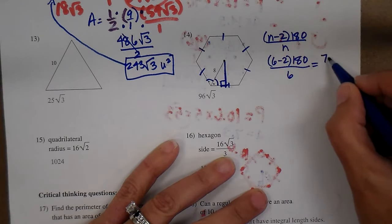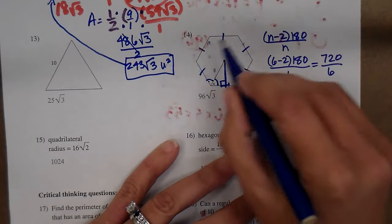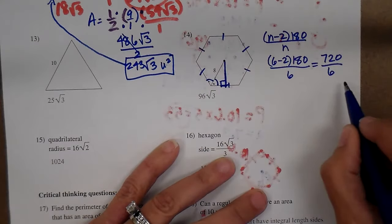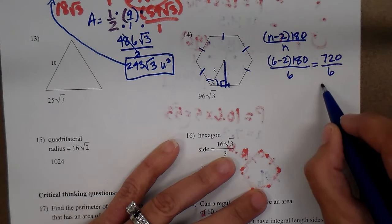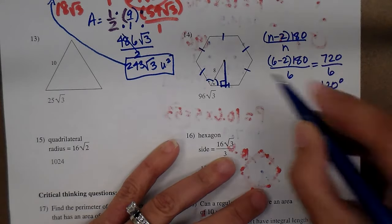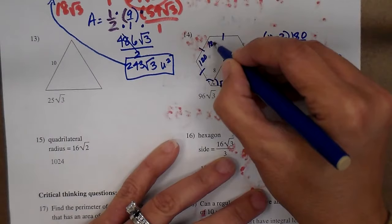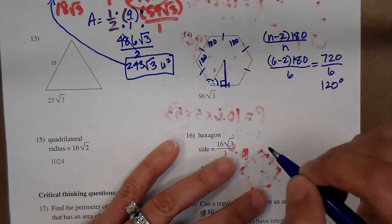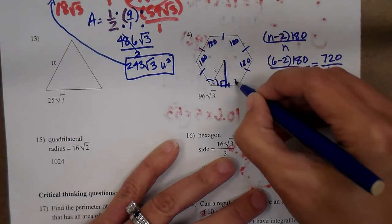I'm going to do 6 minus 2 times 180 and divide that by 6. So 4 times 180 is 720. That means there's 720 degrees total interior. Each one's the same, so I divide it by 6. That gives me 120 degrees per angle.